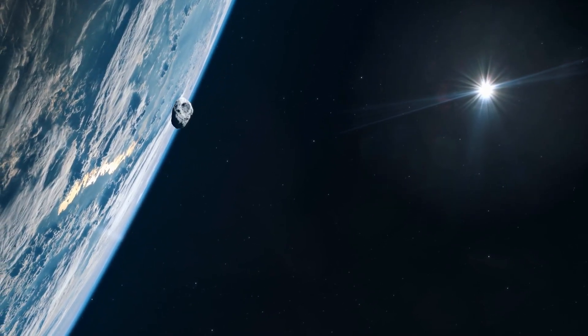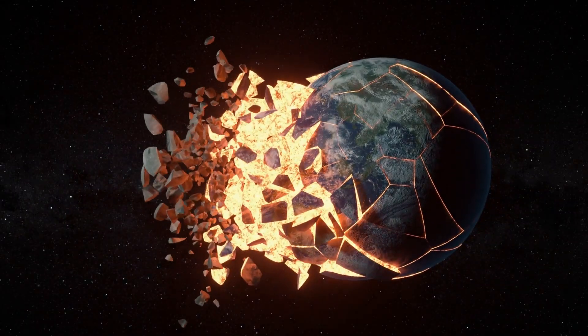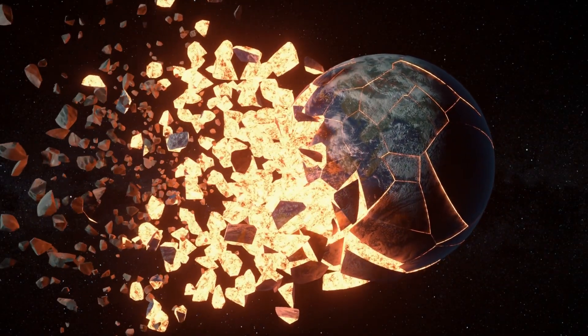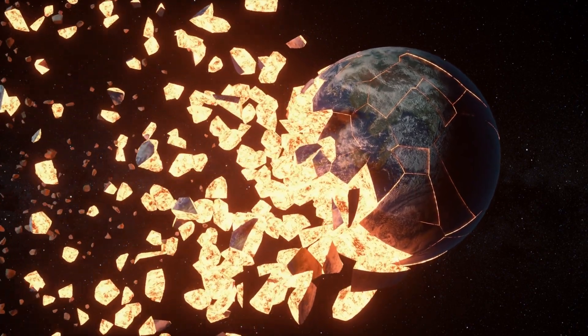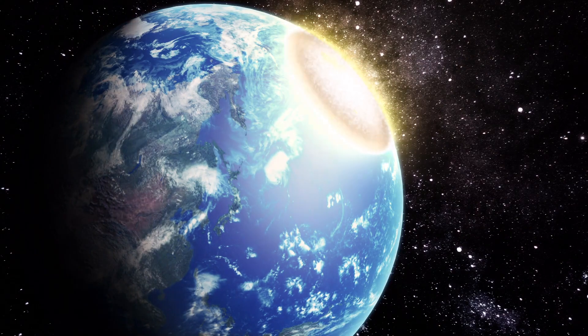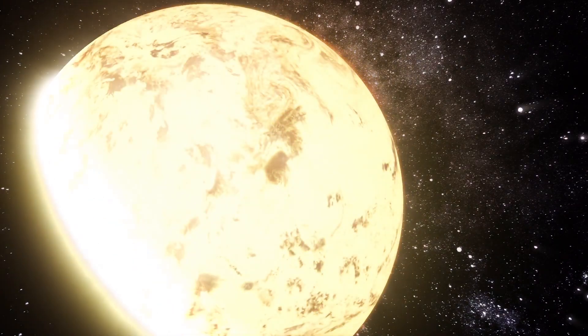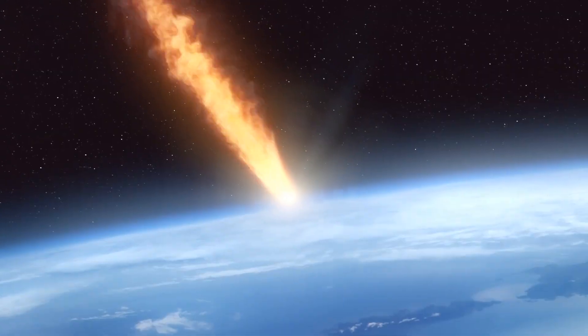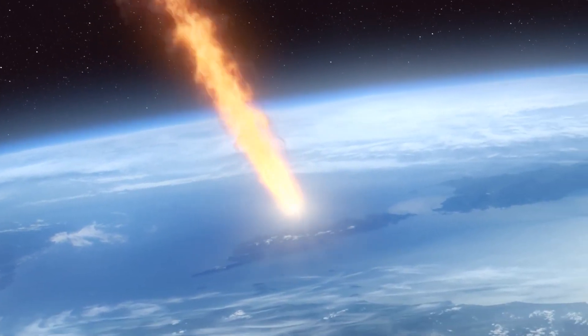If a rogue planet were to collide with Earth, the consequences would be absolutely devastating. The sheer force of the impact would be unimaginable, shattering our planet like a fragile glass ball. A colossal fireball would engulf the Earth, incinerating everything in its path. The heat would be intense enough to melt rock and vaporize oceans. As devastating and cataclysmic as this may sound, this is only the beginning.